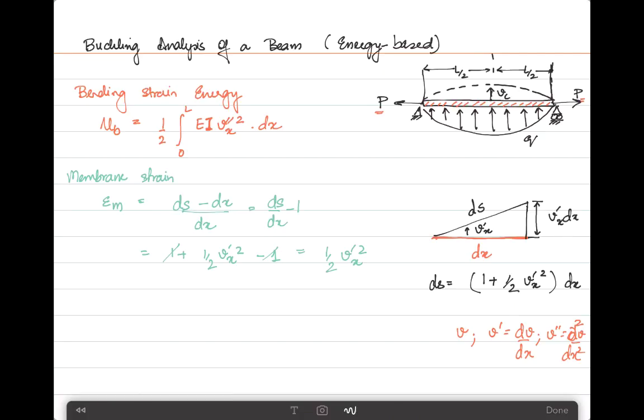The membrane strain energy is given as u_m, can be written as the integral over the length 0 to L of the load P, which is doing some work when the differential length dx is going to lengthen to ds by means of the membrane strain ε_m. If I just substitute all the terms that I already know, I will get the membrane strain to be equal to 1/2 integral of 0 to L, P(v'(x))² dx.